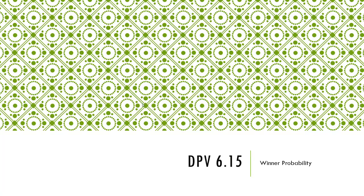Welcome guys to another session on dynamic programming solutions. Today we are talking about DPV 6.15, the probability of choosing a winner given that team A has won i games and team B has won j games. Let's look at the problem.